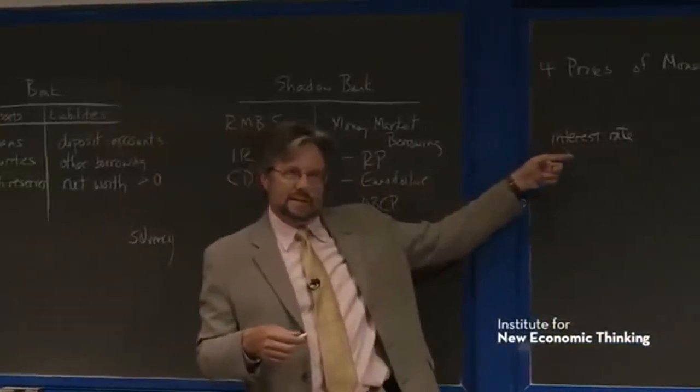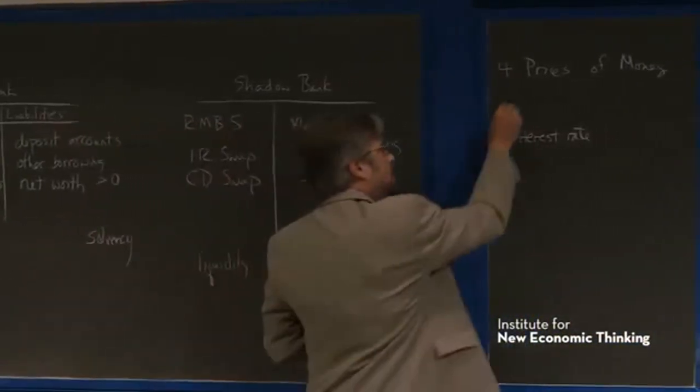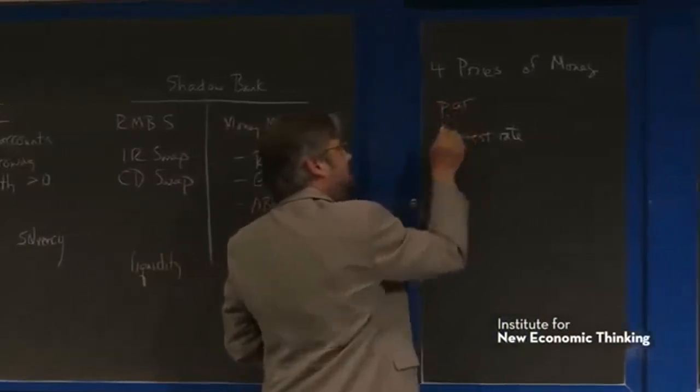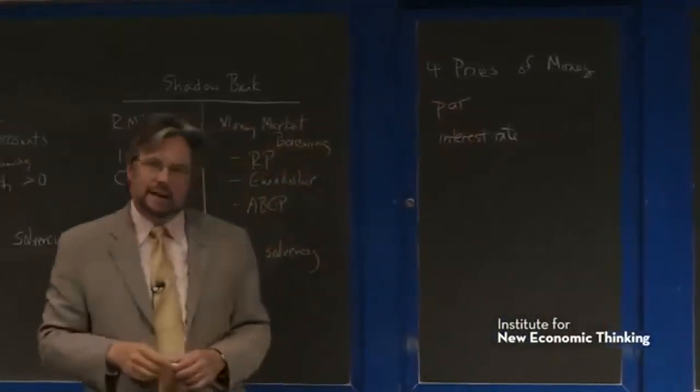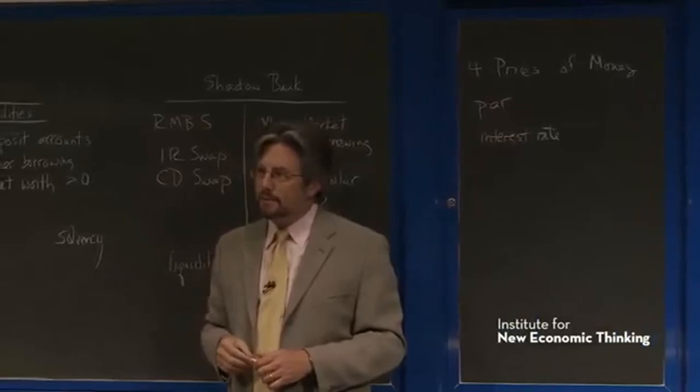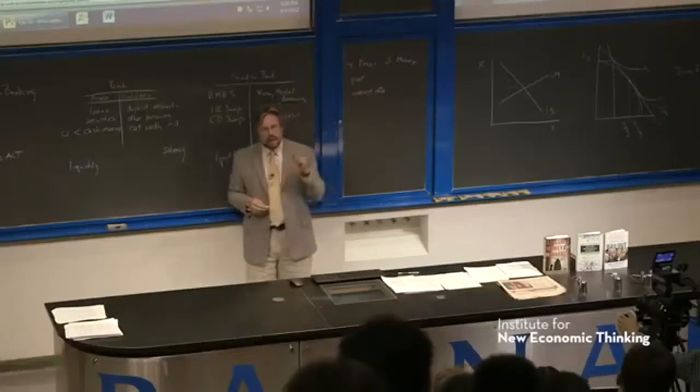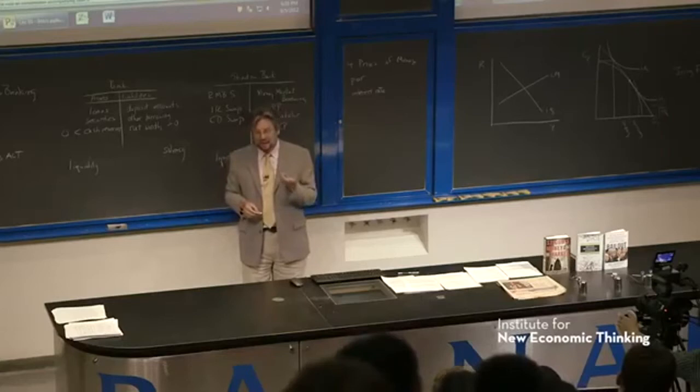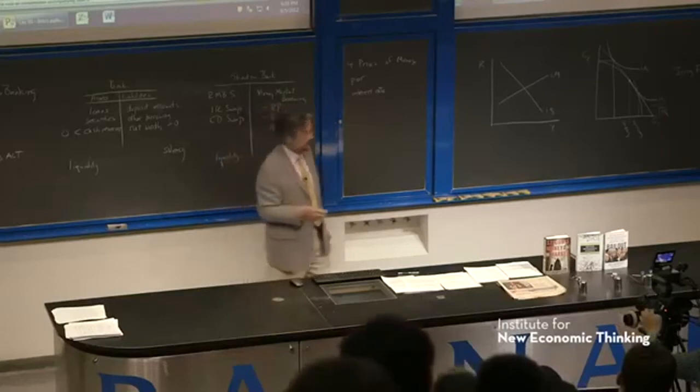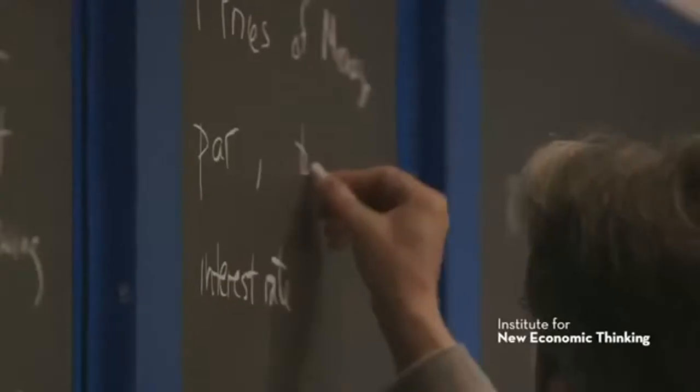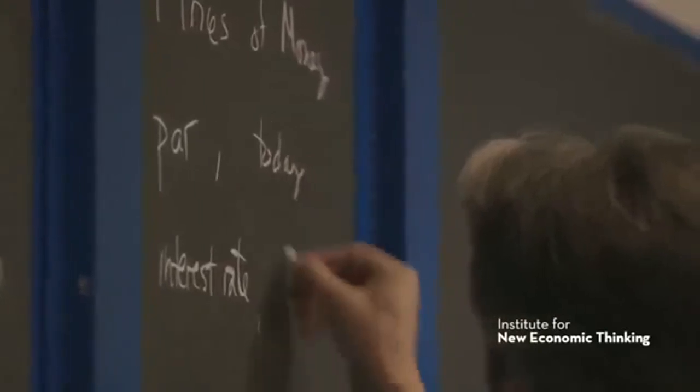But there's a more primitive price that's important that gets neglected, and we're going to pay a lot of attention. And that is the price par. This is the price of one money in terms of another money right now, today. So this is about today. This is about the future.